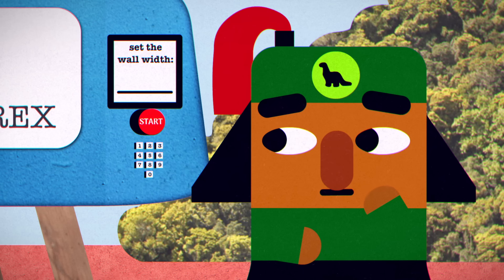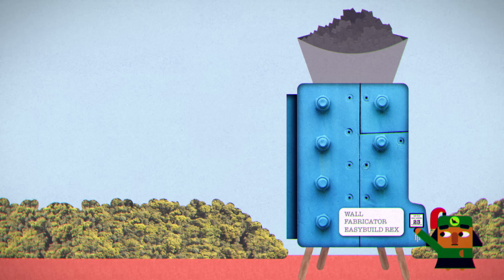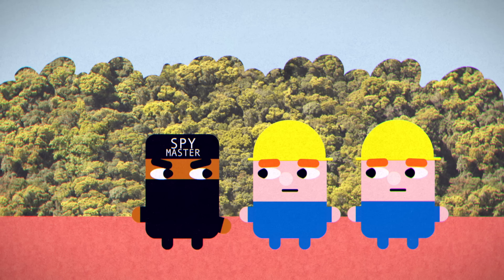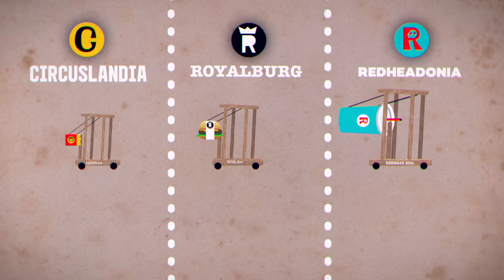However, it can only create wall segments of a specific whole number size that you must determine ahead of time. Your engineers have been in close consultation with your spymaster. Each rival kingdom has wallbusters that come in one specific size.